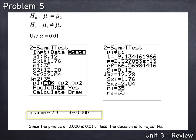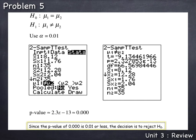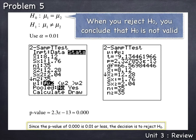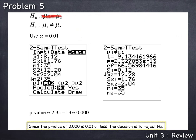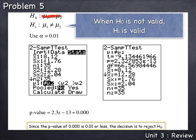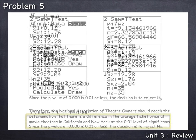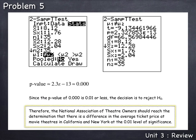Now we can reach our decision. Since the p-value of 0.000 is less than or equal to alpha of 0.01, the decision is to reject H0. When you reject H0, you can conclude that H0 is not valid — the idea that mu1 equals mu2 is not supported by the data. When H0 is not valid, H1 is valid. Since the data does not support that they're equal, the data is actually supporting that they are not equal, so we can conclude that mu1 does not equal mu2. Therefore, the National Association of Theater Owners should reach the determination that there is a difference in the average ticket price at movie theaters in California and New York at the 0.01 level of significance.